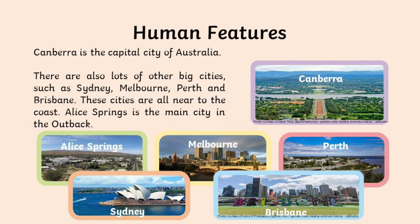Let's move on to look at some of the human features — the man-made structures. Canberra is the capital city of Australia, but there are also lots of other big cities such as Sydney, Melbourne, Perth, and Brisbane. These cities are all near the coast. Alice Springs is the main city in the outback.